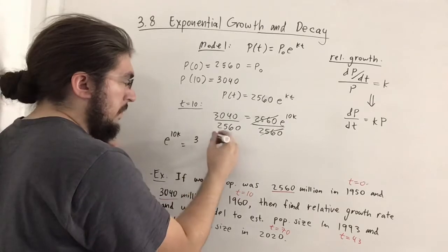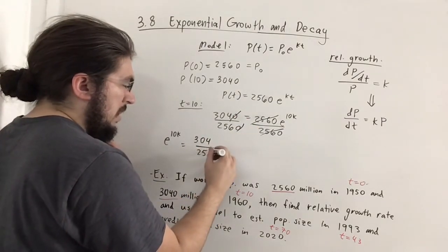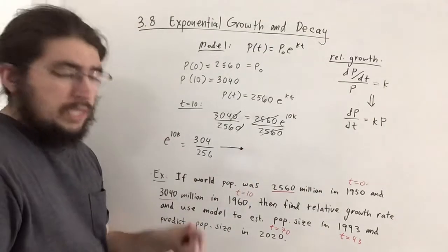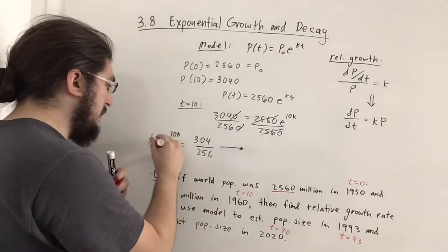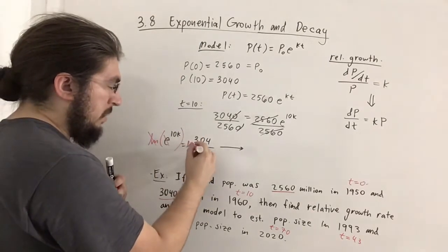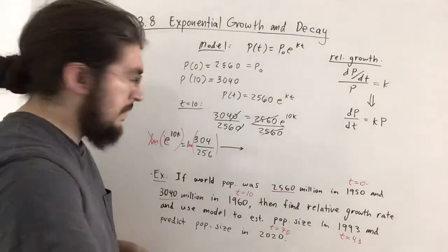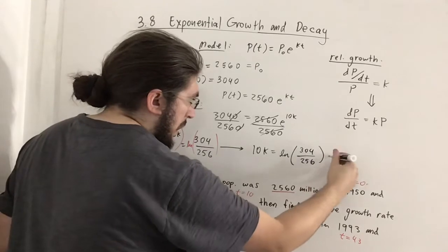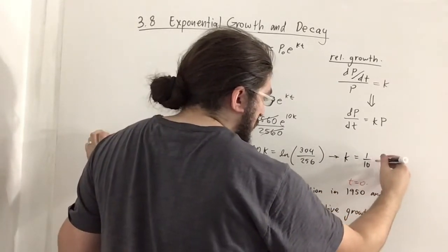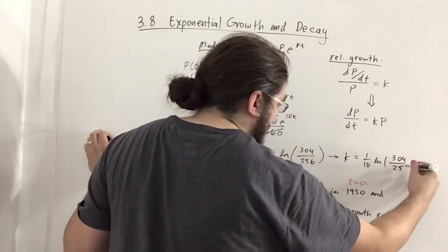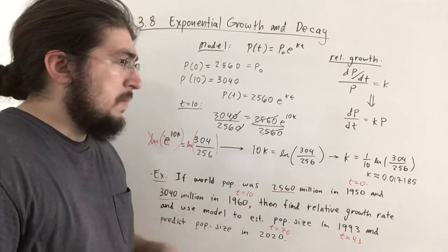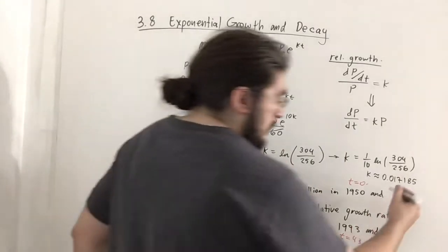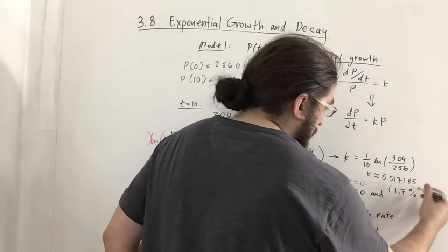We can simplify by canceling the trailing zeros: 3040/2560 reduces to 304/256. Taking ln of both sides: ln(e^(10k)) cancels to 10k, and we get 10k = ln(304/256). So k = (1/10)·ln(304/256). Using the calculator, k ≈ 0.017185, which as a percent is about 1.7% relative population growth.